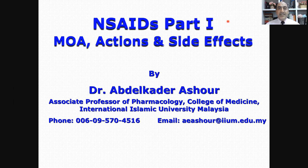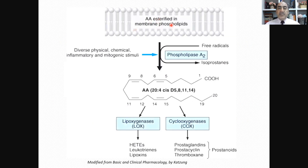Let us start with the mechanism of action of NSAIDs. The story starts from the phospholipids in the cell membrane. Under the effect of phospholipase A2 enzyme that degrades phospholipids, it degrades the ester bond at carbon number two in the glycerol moiety of the phospholipids. When there is inflammatory or mitogenic stimuli, this enzyme will be activated and split phospholipids to release arachidonic acid, abbreviated as AA.